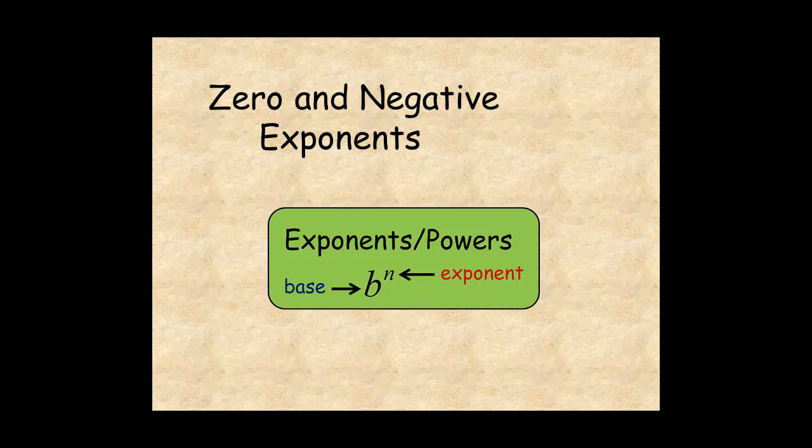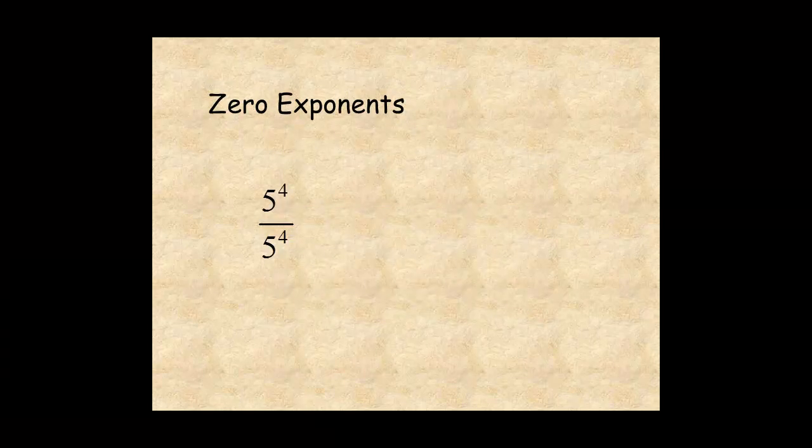This lesson helps you understand zero and negative exponents. If you apply the division rule to this expression, you get 5 to the power of 4 minus 4, which is 5 to the zero.